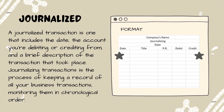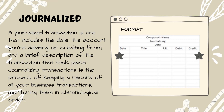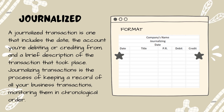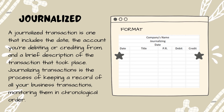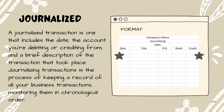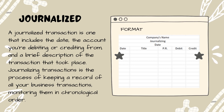Journalize: a journalized transaction is one that includes the date, the account you're debiting or crediting, and a brief description of the transaction that took place. Journalizing transactions is the process of keeping a record of all your business transactions and monitoring them in chronological order. A journalized transaction has a date and account titles placed in debit and credit, recording all transactions in the business.